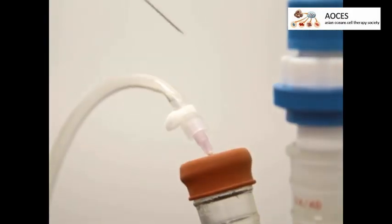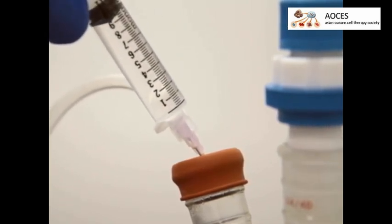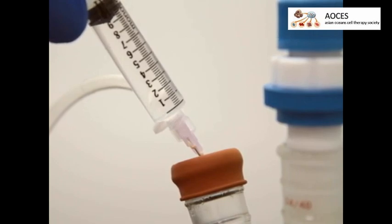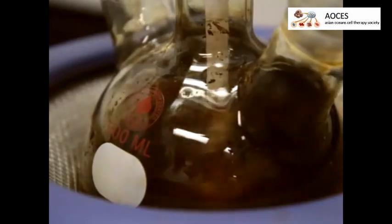Once the reaction has reached 50 degrees Celsius, use a syringe to inject 10 milliliters of 28% ammonium hydroxide through the flask septum. As the magnetite precipitates, the solution should turn black.